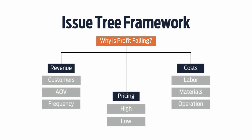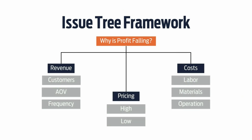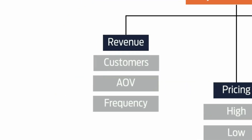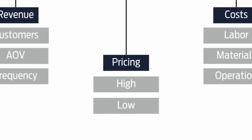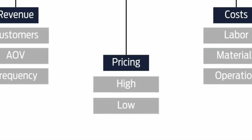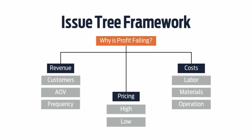Then you break down these categories into subcategories. For revenue, you identify whether it could be due to customer count, average order volume, or frequency. For cost, you break it down into labor, material, or operations. For pricing, the profit could be down due to high pricing or low pricing. It's like turning chaos into a checklist.